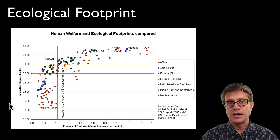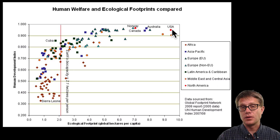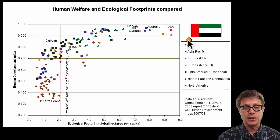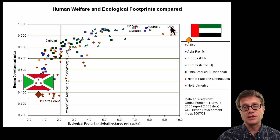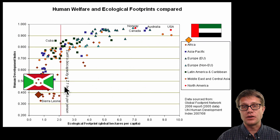This graph is interesting: on the bottom we have the ecological footprint, and on the right side we have a development index — developing countries versus developed countries. The U.S. has a high development index and a very large ecological footprint. The UAE would be way out with a high footprint and high development, while Burundi sits way down as a developing nation. The general trend is as countries develop, they move up and then across, meaning greater impact on the planet. The line at 2.1 global hectares per person represents Earth's biocapacity — what our earth can support — and a lot of countries are actually exceeding that.